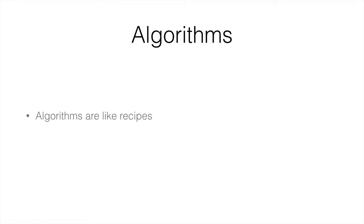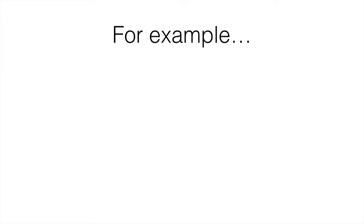So algorithms are like recipes. They are the series of steps that make something happen. For example, if we wanted to make a ham and cheese sandwich, we would first put a slice of bread on a plate.